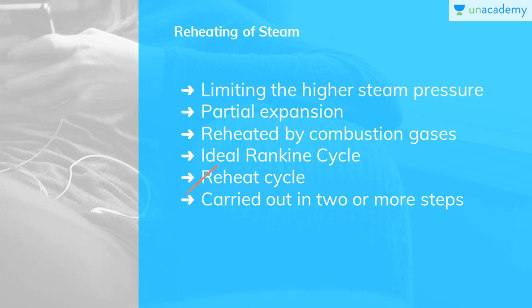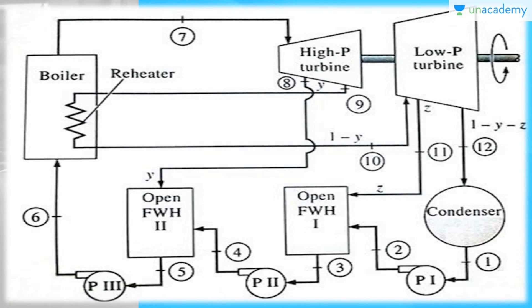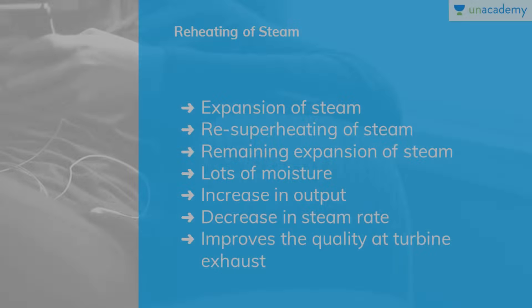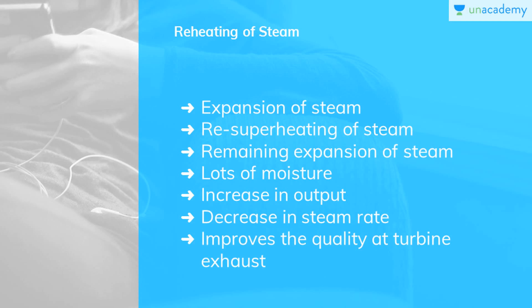In the first step, the steam expands in the high pressure turbine from the initial state to some intermediate pressure. You can see here a flow diagram of a reheat cycle. In the first step, the steam expands in the higher pressure turbine from the initial state to some intermediate pressure. The steam is then superheated at constant pressure in the boiler, and the remaining expansion process — process 3 to 4s — is carried out in the low pressure turbine.